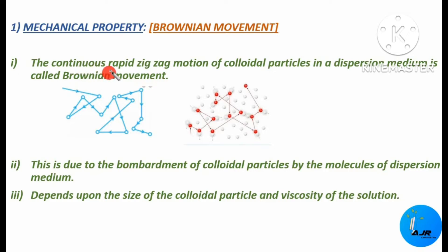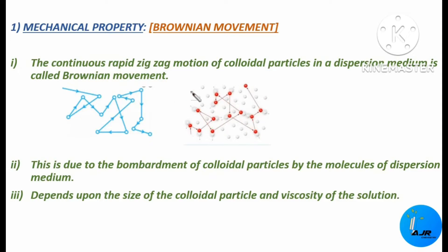The colloidal particles will be moving continuously inside the dispersion medium, and that too very fast. It moves very fast and also in a zigzag manner. There won't be any uniformity — the molecules will be moving in a zigzag motion. That continuous rapid zigzag motion of the colloidal particles in a dispersion medium is called Brownian motion.